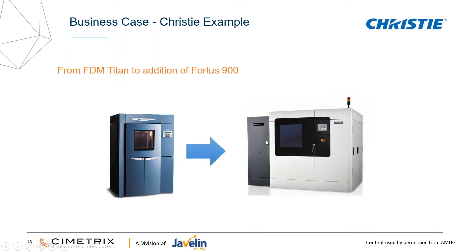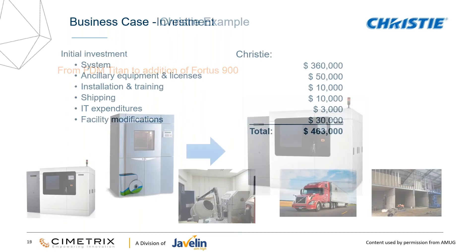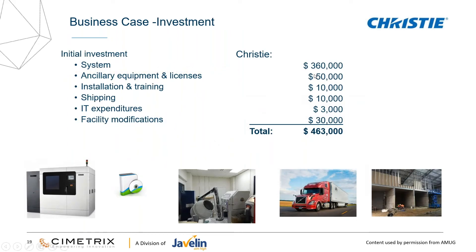I'm going to use a case study from when I worked at Christie Digital Systems — an example of when we purchased a machine and moved from a Titan machine to a Fortis 900. The numbers have been changed a little bit to keep it more generic, but the concept and rough values are there. The costs included: the machine itself, ancillary licenses and software, installation and training costs, shipping costs, IT expenditures to run network cables, and a little bit of facilities modifications. Certain technologies — like a metal printing DMLS or SLS machine — might need even more facility modifications.